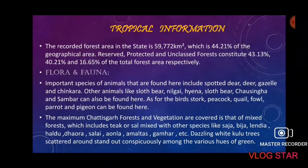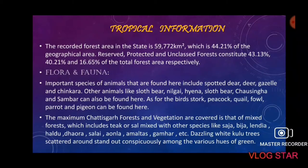Tropical information: The recorded forest area of the state is 59,772 km², which is 44% of the geographical area. Reserved, protected, and unclassed forests constitute 43.13%, 40%, and 16.65% of the total forest area respectively, making Chhattisgarh's climate very pleasant.